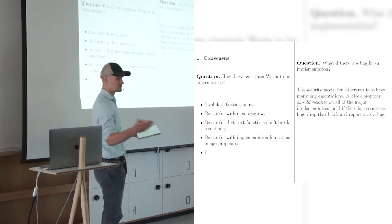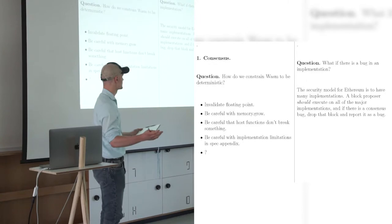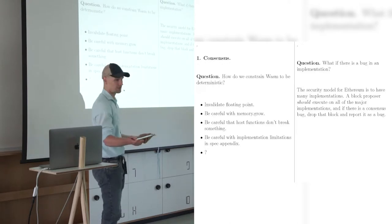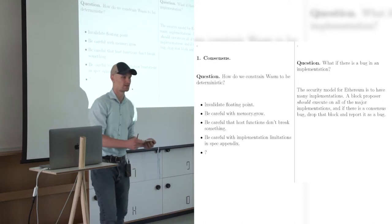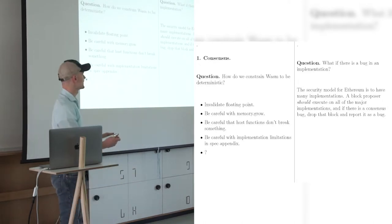And a block proposer should execute on all of them. And if there's a consensus bug, if something computes differently than others, then drop that block, report there is a bug. Or if it's just on one that's not used much, then just maybe include it with understanding that every node that's running only the one that broke might fork. So there's dangers.